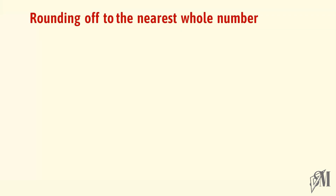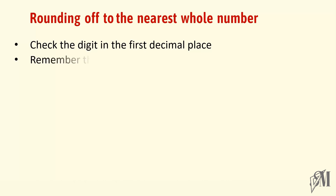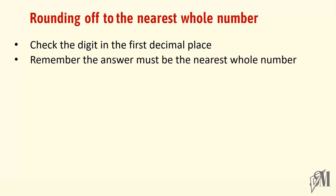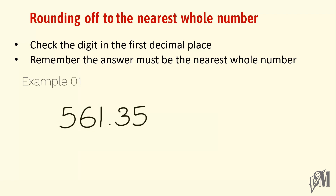First, rounding off a decimal number to the nearest whole number: what you should do is check the digit in the first decimal place, and remember the answer must be the nearest whole number. Look at this example — 561.35 is to be rounded off to the nearest whole number. The digit at the first decimal place is 3. Since 3 is less than 5, we neglect the two decimal digits and our answer becomes 561.